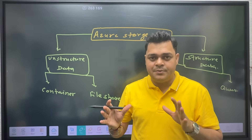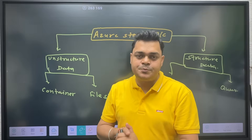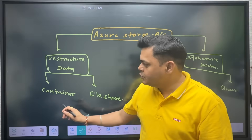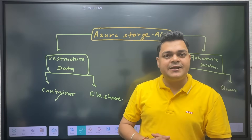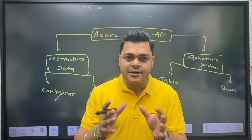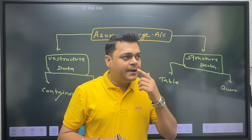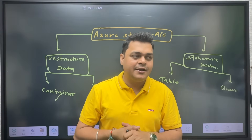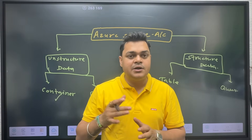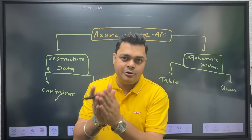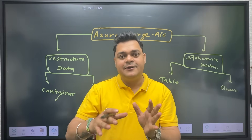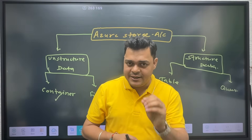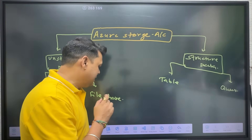Many services are involved in our storage account. Whenever we create a storage account on the Azure portal, we can find multiple features and options. We are going to start from containers because a container gives us the option to establish blobs. We can create multiple types of blobs in a single container and configure access tiers, snapshots, and object replication to copy data to a different geographical location or region.